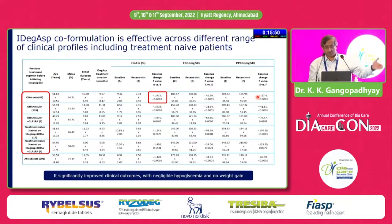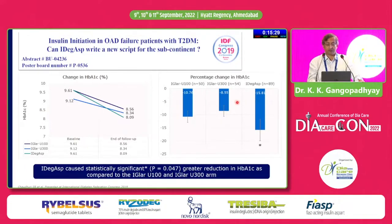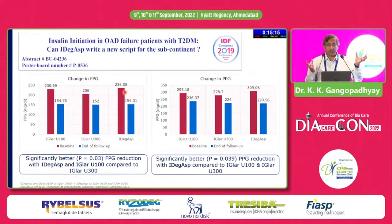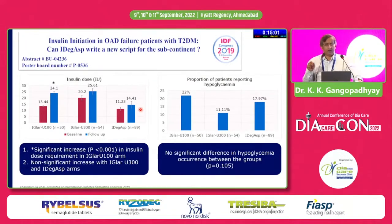Patients who are on insulin also get this benefit. This study compared IDegAsp versus Glargine U100 versus Glargine U300. The drop in HbA1c was most with IDegAsp — about 15% drop as opposed to 10% and 9% for U100 and U300. You have got a big postprandial drop, and you have also got an equally big fasting sugar drop. So you are tackling both fasting and PP. Look at the insulin dose requirements, which are much less as compared to others.